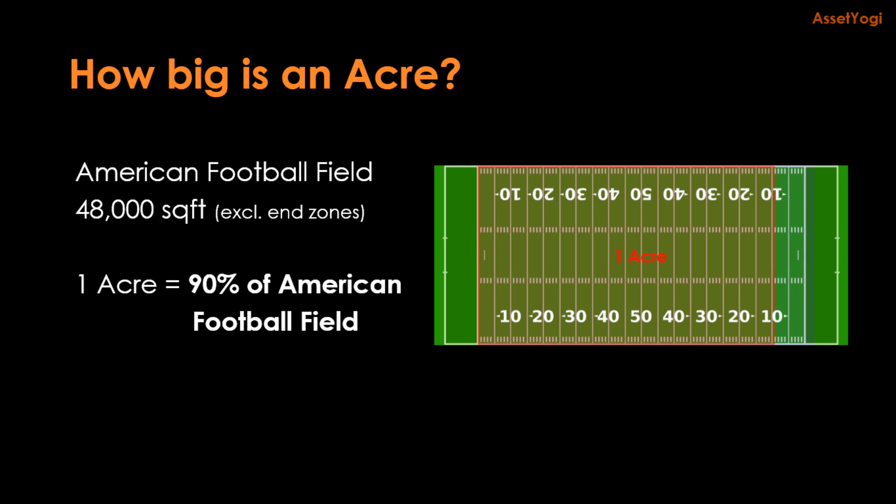Now if you have to compare it with an American football field, which is about 48,000 square feet excluding the end zones, an acre is about 90 percent of American football field, excluding the end zones. As you can see in the red portion here, I am trying to draw the line, but they may not be very straight, but I think you get an idea. This is an acre. This is about 90 percent of the football field, excluding the end zones.